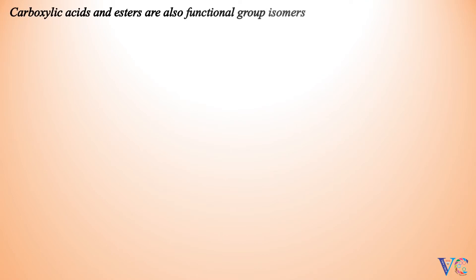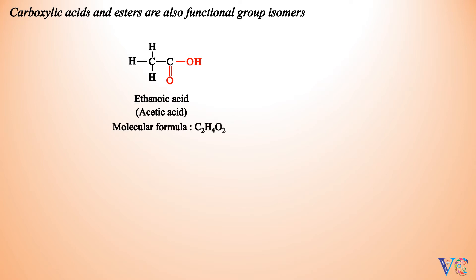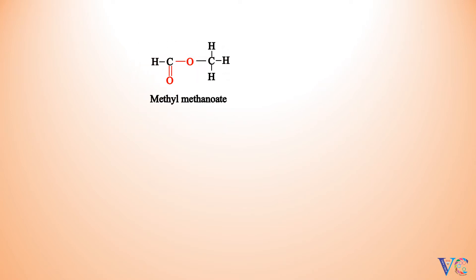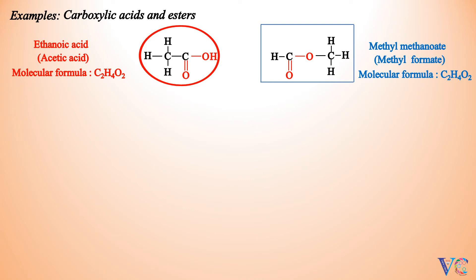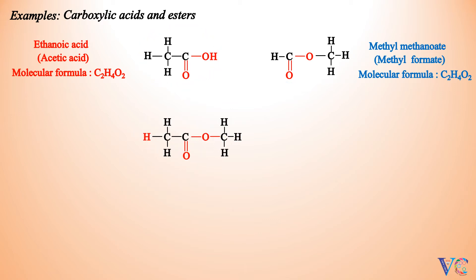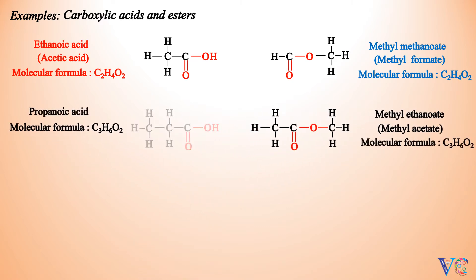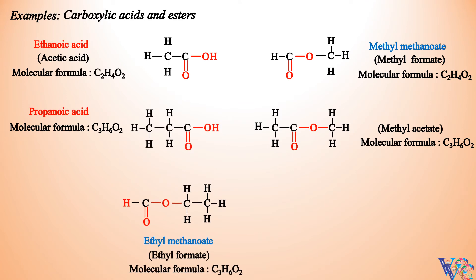Carboxylic Acids and Esters are also functional group isomers. Ethanoic Acid (Acetic Acid) and Methyl Methanite (Methyl Formate) both have molecular formula C2H4O2 and are functional group isomers. Propanoic Acid (C3H6O2) and Methyl Ethanite (Methyl Acetate, C3H6O2) are also functional group isomers. Methyl Ethanite and Ethyl Methanite are functional group isomers of Propanoic Acid.